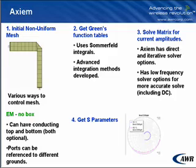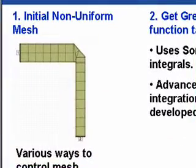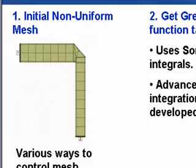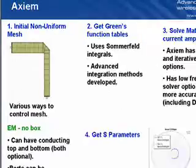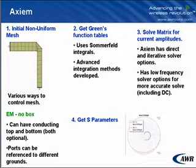Axiom is not in a box and does not use a uniform mesh — you can see rectangles and triangles. You solve for all the currents talking to each other to get the S-parameters, but the big difference from EMSite is there is no box, so for example we can look at radiation.